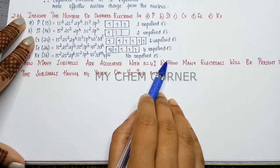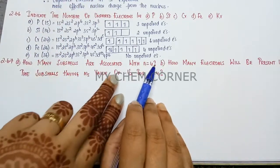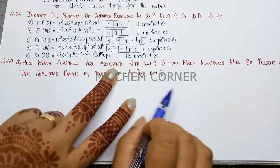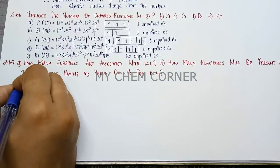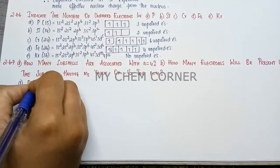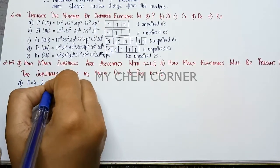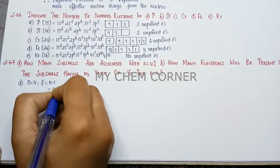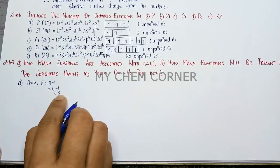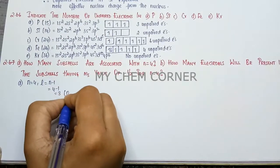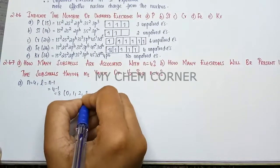So let's solve the first one which says how many subshells are associated with n is equal to 4. First thing that you need to know is when n is equal to 4, to know the subshell you should know l value. So l is n minus 1 which is 4 minus 1 equals 3. So up to 3 you will have values which is 0, 1, 2 and 3.